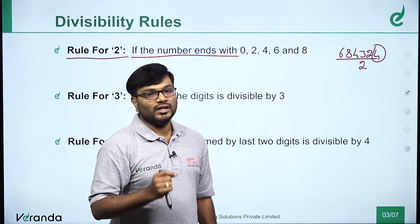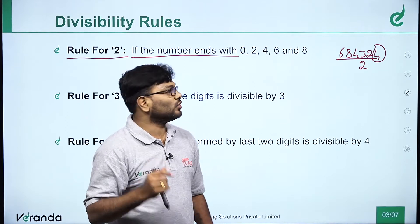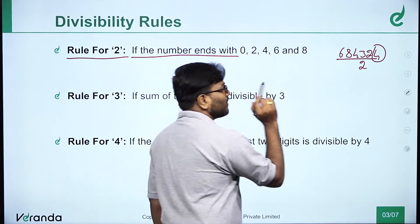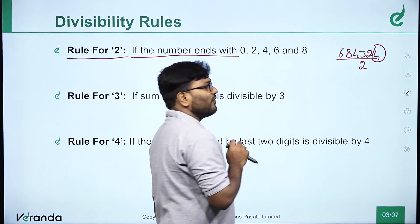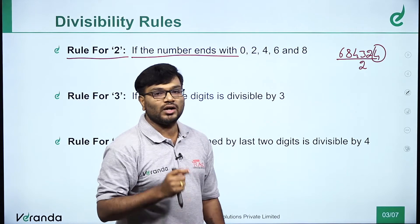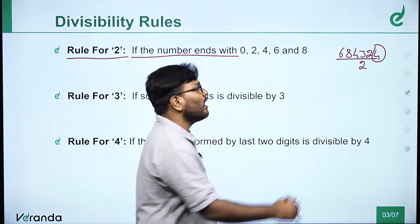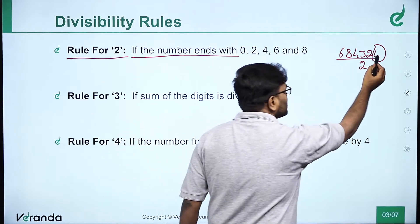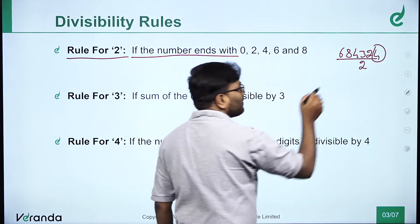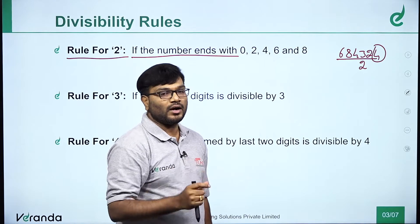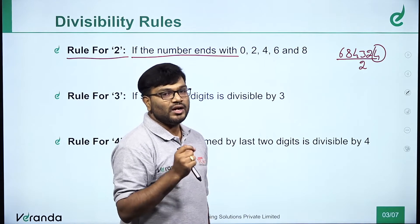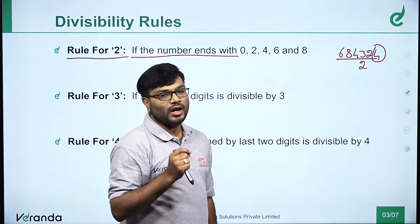Definitely divisible by 2. So we will check on the table. Simple: check the numbers in the unit place — if it is an even number, that number is divisible by 2.